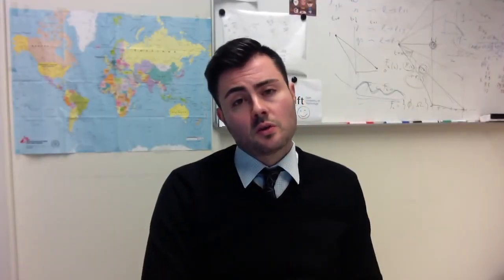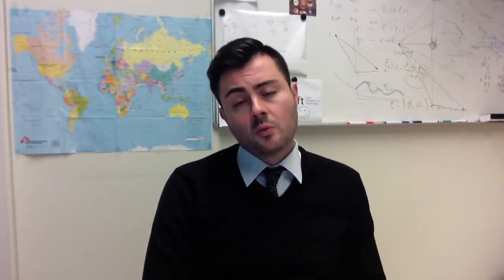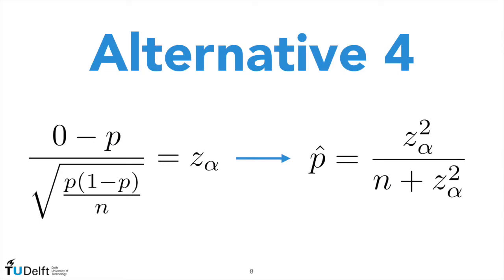Another possible estimator is the so-called confidence interval estimator, which relies on the basics of hypothesis testing. Given that we have observed zero defaults, we look for the largest p-hat we would fail to reject as an acceptable estimate of p. This is done by the usual z-standardization and solving for p, where z-alpha is the standard normal quantile associated with significance level alpha. The limitation of this method is that the standard normal approximation typically works for n times p greater than or equal to 6. In low default portfolios, n is usually small, so the approximation may fail.